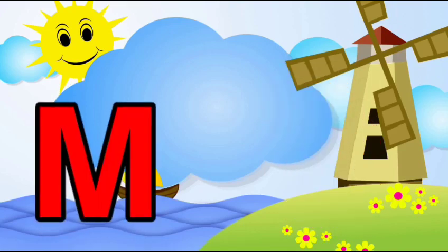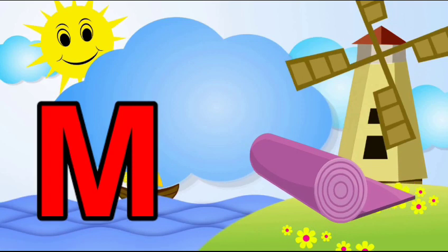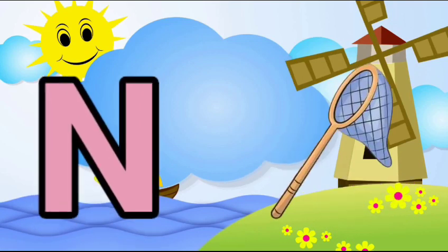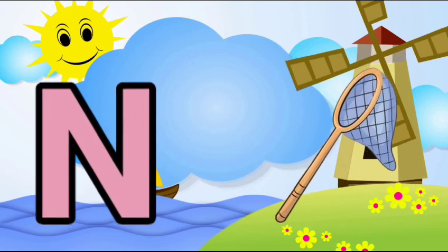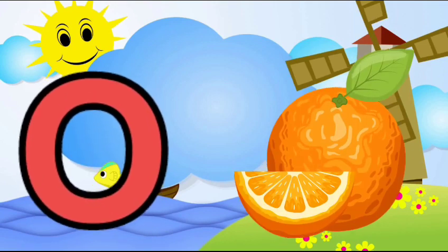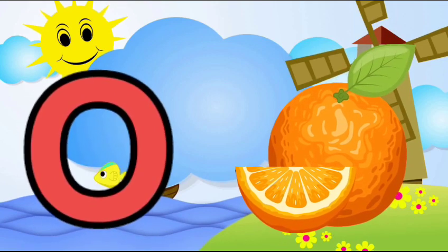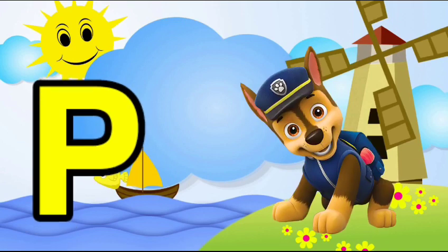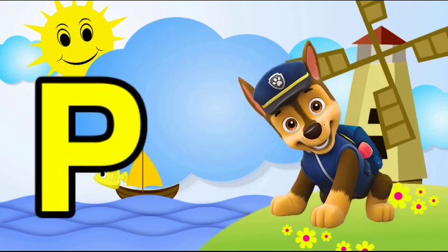M is for mat, m-m-mat. N is for net, n-n-net. O is for orange, o-o-orange. P is for pet, p-p-pet.